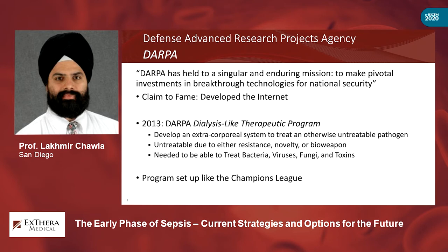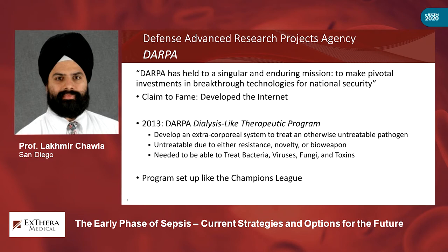The way this DARPA program is set up is very different from a usual government agency — it's set up like the Champions League in football. It's essentially a playoff: different companies come in with different devices aimed at achieving the goal of an extracorporeal system that can treat bacteremia, viremia, fungemia, et cetera. Each company is given a series of tasks, they go back to their labs, and three to four months later everyone shows their results. Devices that don't perform well get knocked out; those that do well receive more government funding and continue up the playoff.